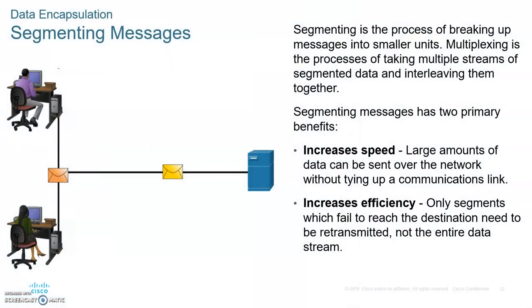Let's talk about data encapsulation. Why do you need to segment the data — to break up the data? When data, sometimes called a message, is passed from the top layers to the transport layer, the first thing that TCP at the transport layer does is take the data and break it up into smaller segments to increase speed and efficiency.